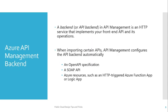Now let's try to understand Azure API Management Backend. A backend, or API backend, in API Management is an HTTP service that implements your front-end API and its operations — whether read, write, update, or whatever operations you are performing. When importing certain APIs, API Management configures the API backend automatically, such as an OpenAPI specification, a SOAP API, as well as Azure resources like Azure Function App or Logic App. When you integrate these types of APIs to your Azure API Management, it automatically creates a backend.